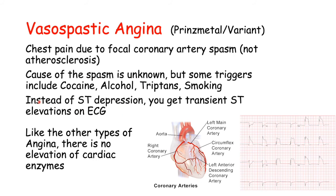In vasospastic angina, instead of an ST depression you see transient ST elevations on the ECG — as shown in the image with a very elevated ST segment following the QRS complex. This reflects a spasm in one of the coronary arteries supplying the heart muscle. Like the other types of angina, there is no elevation of cardiac enzymes, so troponin remains normal. Vasospastic angina tends to present in younger patients compared to stable and unstable angina, as it is not dependent on the formation of atherosclerosis.